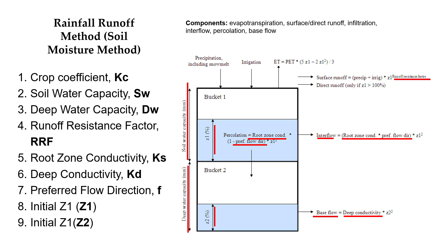The root zone outflows are the interflow and percolation, which depend on the soil water capacity, the soil water conductivity, and the preferred flow direction. The preferred flow direction divides the water flow between interflow and percolation.